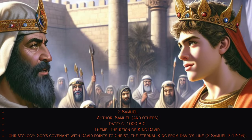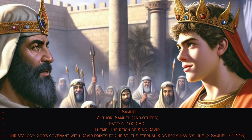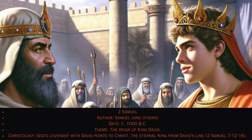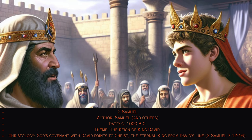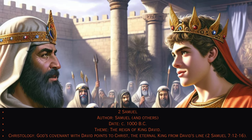10. 2 Samuel. Author: Samuel and others, circa 1000 B.C. Theme: The reign of King David. Christology: God's covenant with David points to Christ, the eternal king from David's line (2 Samuel 7:12–16).